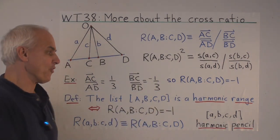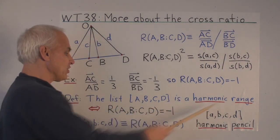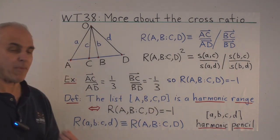When four points have a cross-ratio of minus one, then they are called a harmonic range. So we say that the four points in order A, B, C, D form a harmonic range when the cross-ratio is minus one.